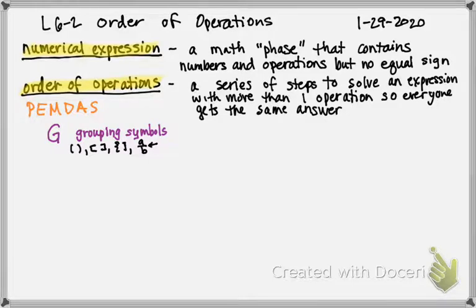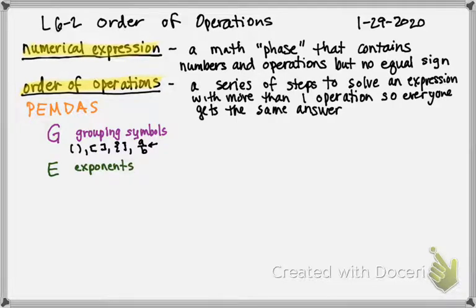G is our first and most important thing to start with. Next comes exponents — the one we talked about yesterday. So after we've taken care of anything in a grouping symbol, we do any exponents. Remember, exponents are called powers. An example would be 4 to the 5th power — we'd have to figure out what 4 to the 5th power equals before we can solve the problem further.